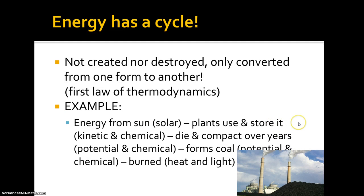Energy has a cycle. Energy is not created nor destroyed — it's only converted from one form to another. That happens to be the first law of thermodynamics. In this unit you need to understand that energy goes from one form to another. For example: energy from the sun is solar; plants take it in and store it as kinetic and chemical energy as they grow and produce fruits and sugars. They die, compact over years — that is potential and chemical energy in the carbon compounds. It forms coal, which is potential and chemical energy, and when burned it's converted to heat and light.